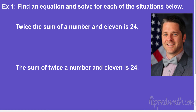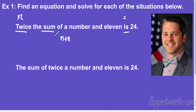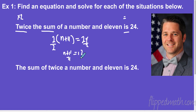So we have two equations here and we want to find an equation and then solve it. Let's talk about some important words: sum means addition, twice means multiply by two, and is means equals. I want the sum of a number and 11 — that's these two things — and I want twice that sum, so twice that sum equals 24. To solve, divide both sides by two, giving n plus 11 equals 12. Subtract 11 from both sides, and we get n equals one.